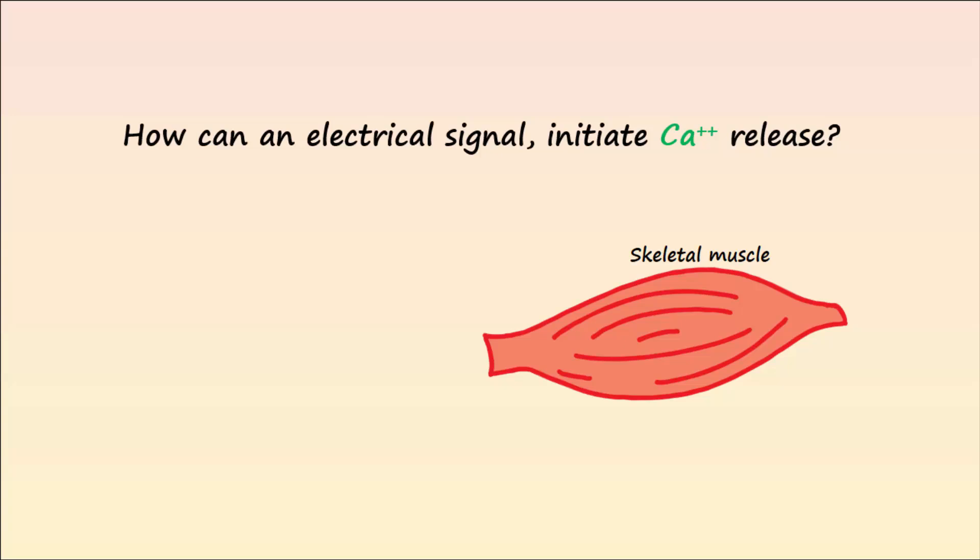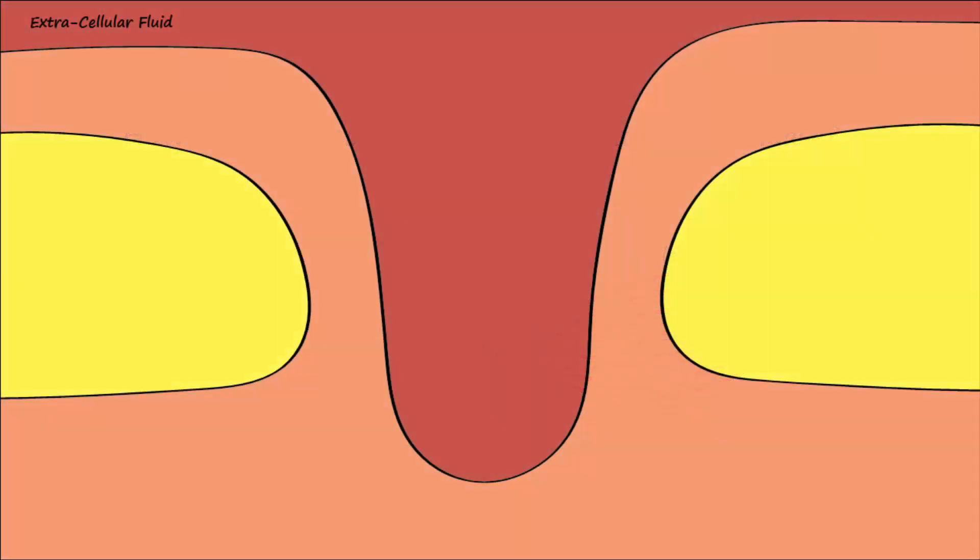The sarcolemma is the plasma membrane of the skeletal muscle. Inside the muscle cell, the sarcoplasmic reticulum stores high concentrations of calcium. The sarcolemma has frequent invaginations known as T-tubules that allow action potentials to be propagated toward the interior of the cell.